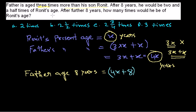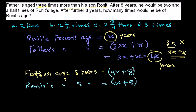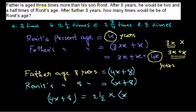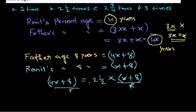Ronit's age after eight years will be x + 8. The equation says the father's age after eight years equals two and a half times Ronit's age after eight years. So 4x + 8 equals two and a half, or five over two, times (x + 8). This gives us the equation to solve for x.